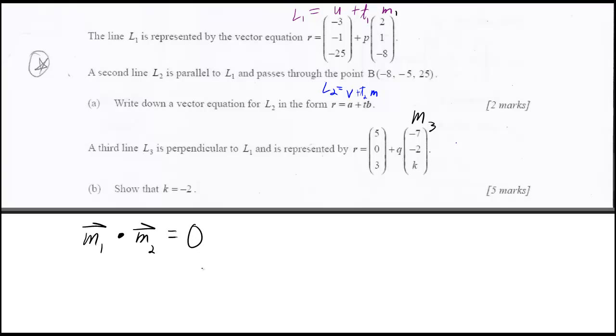So the way that that goes is basically like the matrix multiplication. So you do 2, 1, 8 is going to be dotted with negative 7, negative 2, and k.